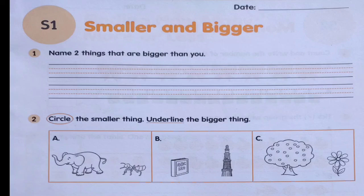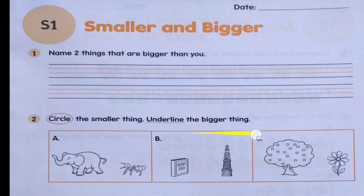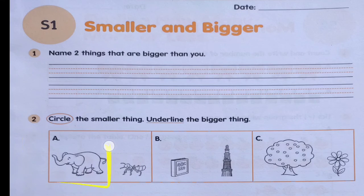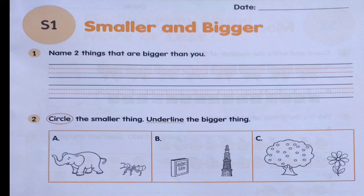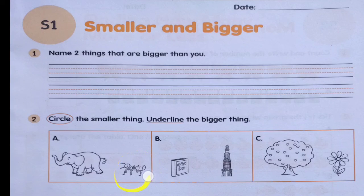Number 2 says: circle the smaller thing and underline the bigger thing. Look at these pictures. In picture A, we have an elephant and an ant. For a bigger thing, you will need to underline. For a smaller thing, you will just circle. You will do the same with B and C.